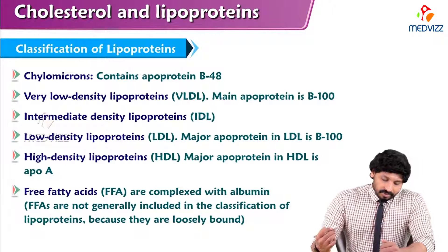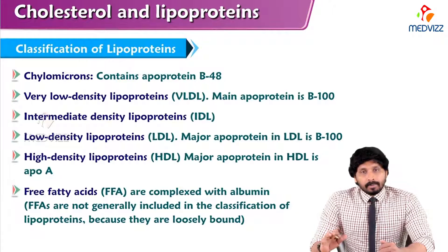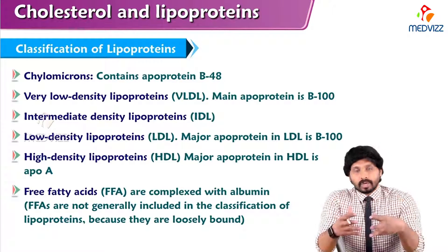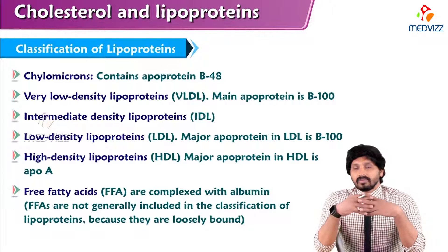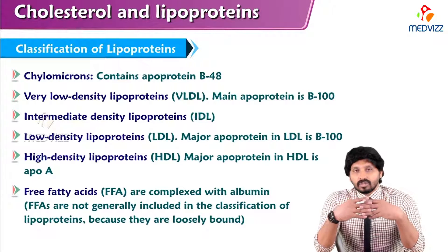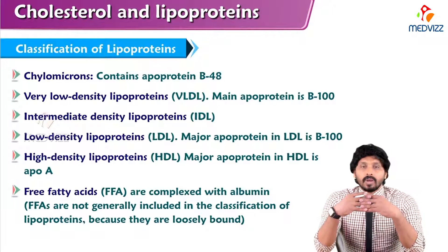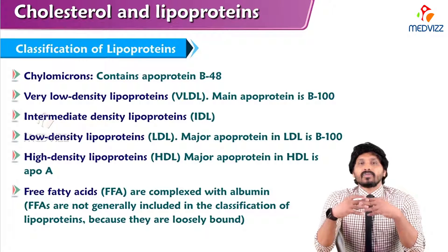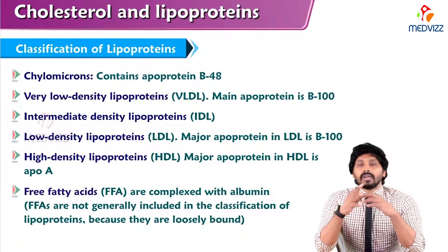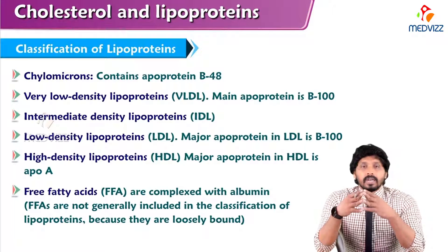Coming to the classification of lipoproteins, there are 5 major types of lipoproteins. First of all, what is a lipoprotein? A lipoprotein is a combination of lipid and proteins. Because lipids are insoluble in nature, when we consume them in the diet and they undergo digestion and absorption, for transportation — being insoluble — they need a carrier protein. So that carrier protein in combination with lipid and protein is named a lipoprotein.